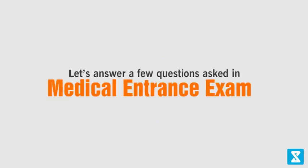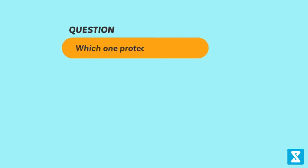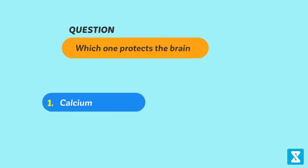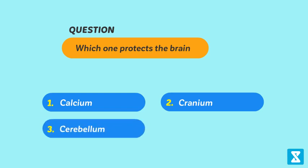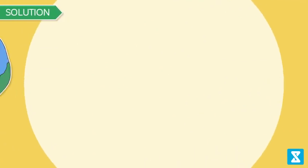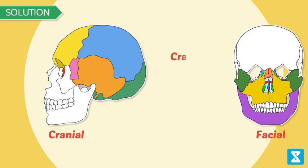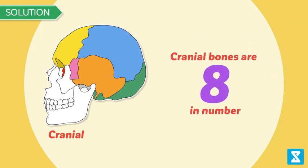Let's answer a few questions from medical entrance exams. Question: Which one protects the brain? (1) Calcium, (2) Cranium, (3) Cerebellum, (4) Cerebrum — asked in BHU PMT 2011. The skull is composed of cranial and facial bones; cranial bones are eight in number and form the hard protective outer covering, the cranium, for the brain. Hence, option 2 is the correct answer.